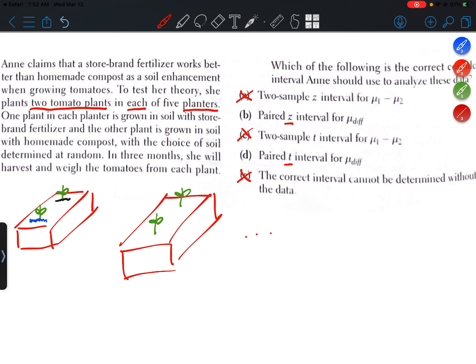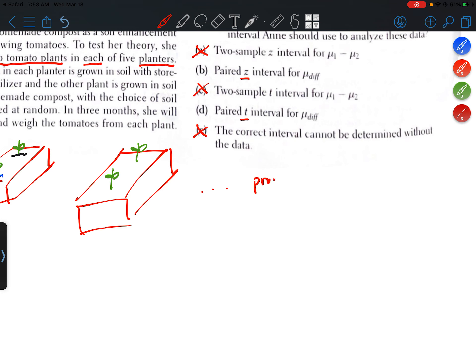Now, in AP stats, there's really two types of procedures that we do. Procedures for proportions. Let me write this down. Proportions versus procedures for means.